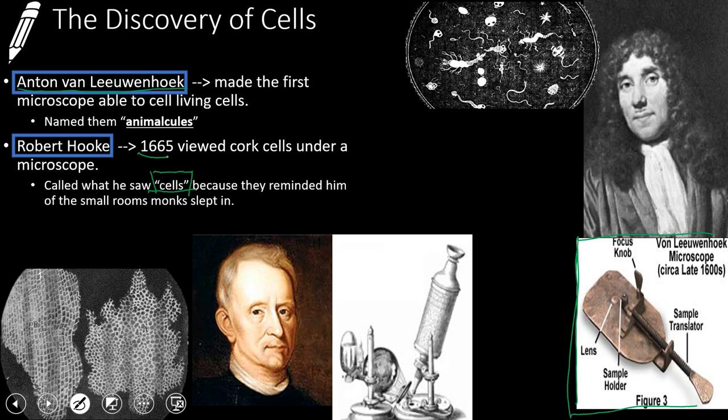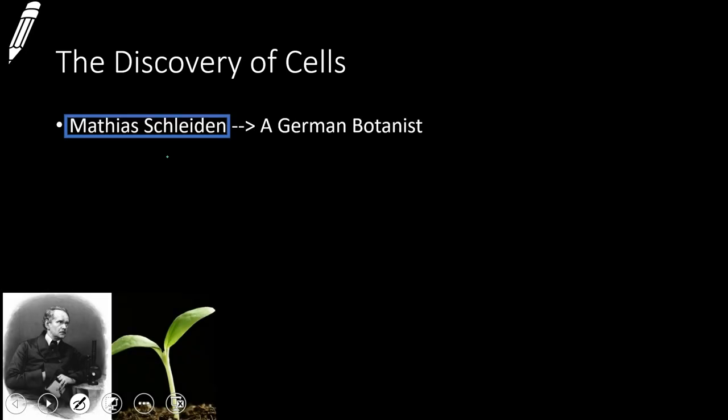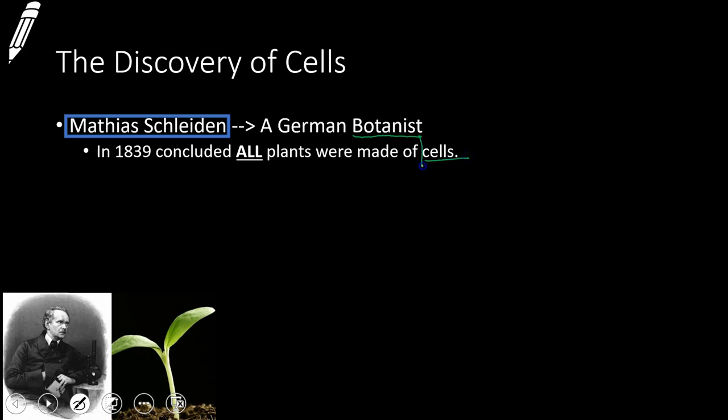So people kept getting their hands on microscopes and kept studying things. Later on down the road, we have another gentleman named Matthias Schleiden, and he was a German botanist — someone who studies plants. He gets his hands on a microscope and looks at all these plants, and what he discovers is that every single plant he looks at is made up of cells. Every plant is made up of at least one cell. And that's in 1839 — you don't need to know the dates, I'm just giving them as a reference.